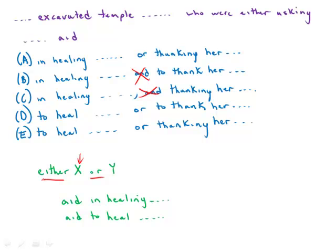The X and the Y have to be in parallel, so we're either asking or thanking—so asking or thanking, that's correct. Either asking or to thank, that is not in parallel, so B, C, and D are out right away.